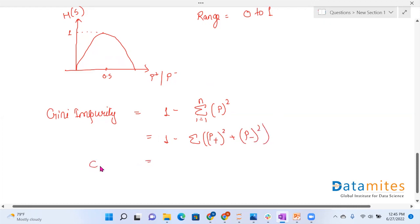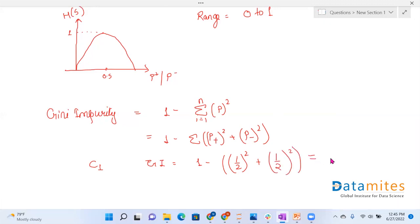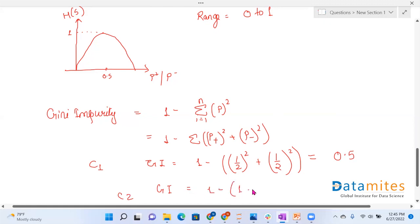For category C1, Gini index is given by 1 minus probability of yes that is 1 by 2 square plus probability of no is again 1 by 2 square. This is equals to 0.5. While Gini index for category C2 is given by 1 minus 1 plus 0. That is 0.